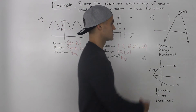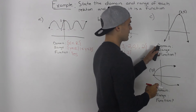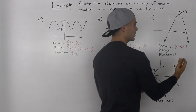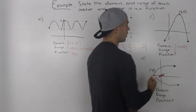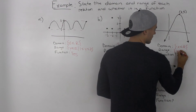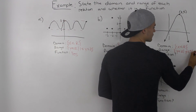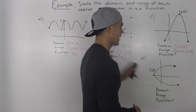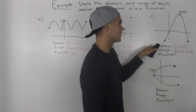Moving on to part c. We have a parabola facing downwards with a vertex at (2, 5). The domain of a regular parabola is always x is an element of real numbers — there's no limit on x, it's infinite. What about the range? The range of a parabola always depends on the vertex. The y values can be anything, however they have to be less than or equal to 5, which is the y value of the vertex. Since it's a continuous line, x and y are elements of real numbers, included in the domain and range.